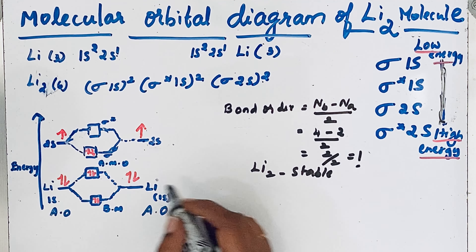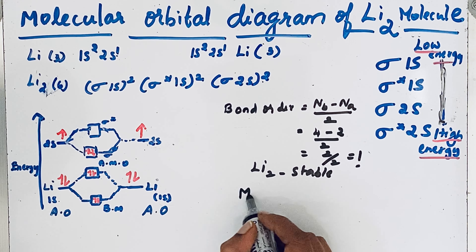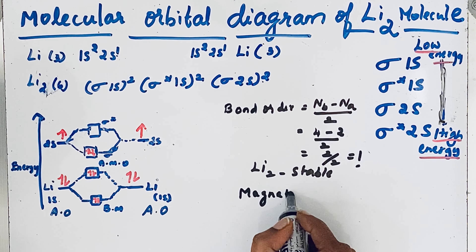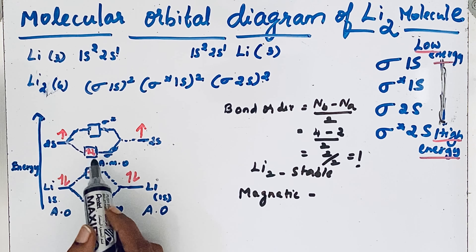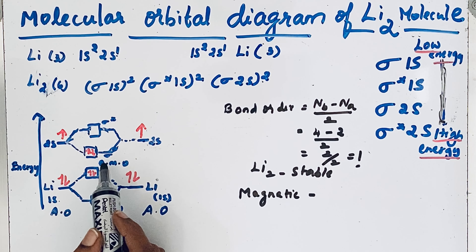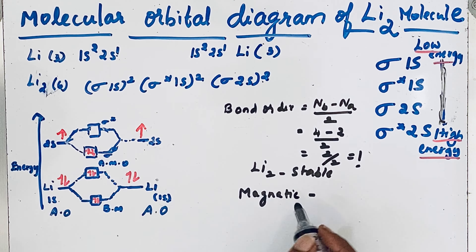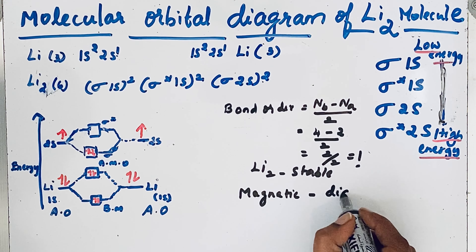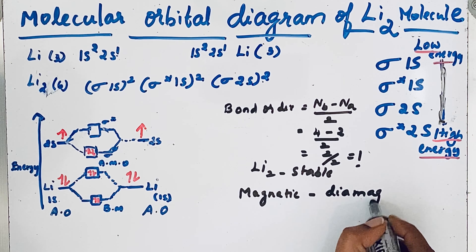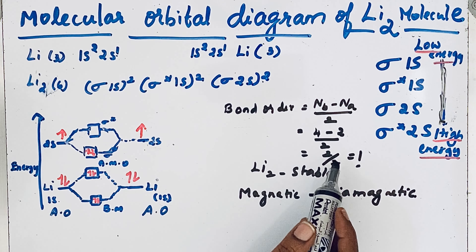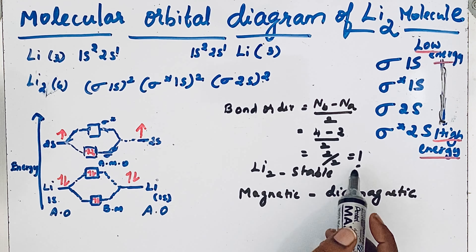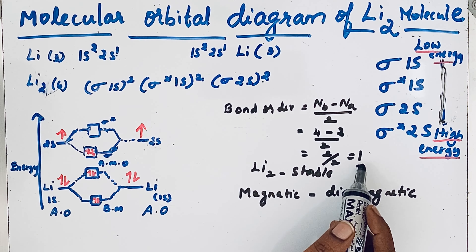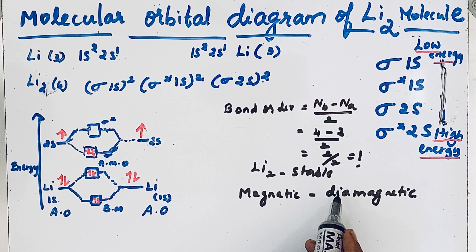Now let us find out whether the molecule is diamagnetic or paramagnetic — that is, its magnetic behavior. All electrons in the lithium molecule are paired electrons; there are no unpaired electrons. So the lithium molecule is diamagnetic. In summary: bond order is 1, it is a stable molecule, there is a single bond, and the magnetic property is diamagnetic.